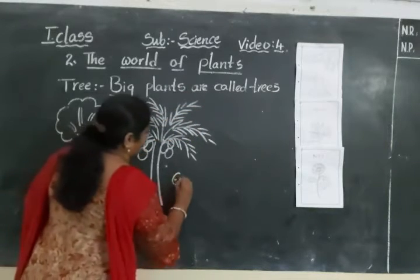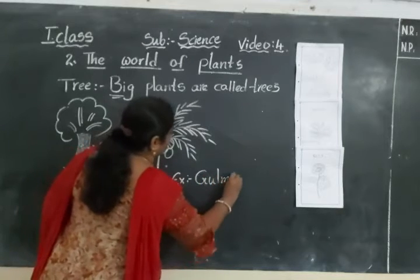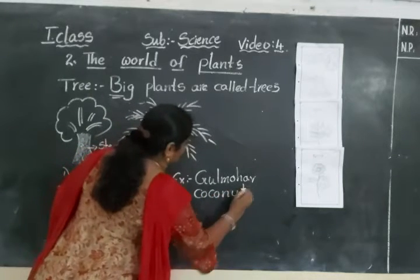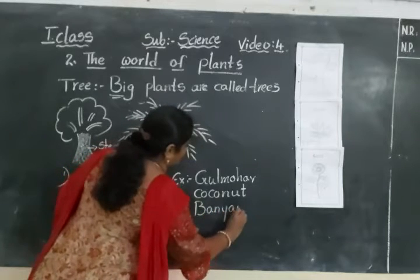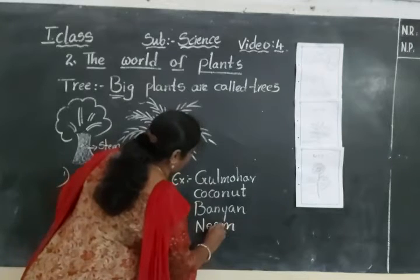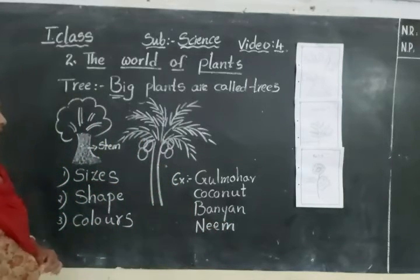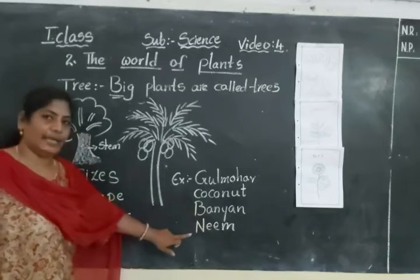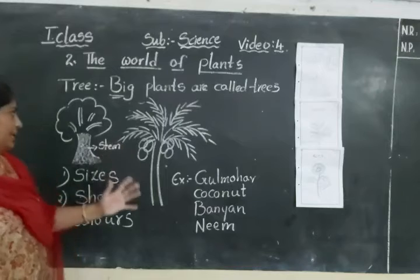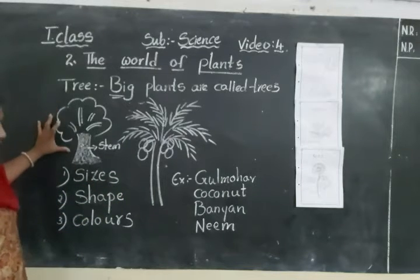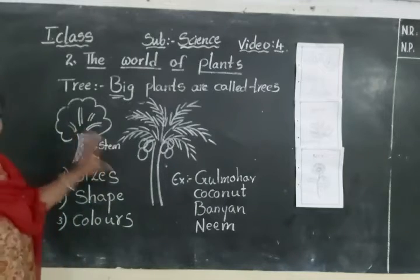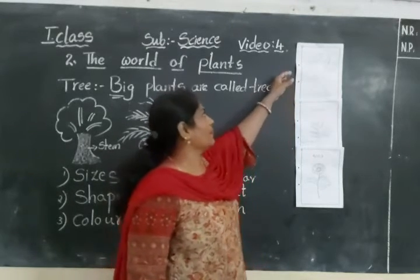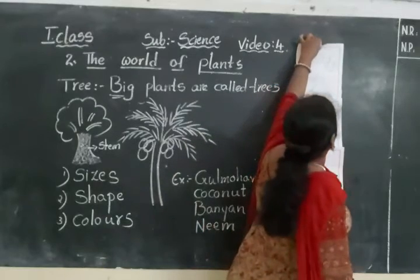For example: Gulmohar, coconut tree, banyan tree, and neem tree. These trees are very big. Look at the board — for example, Gulmohar tree, coconut tree, banyan tree, and neem tree. They are very big in size. This is the chart of a tree — example: mango tree.